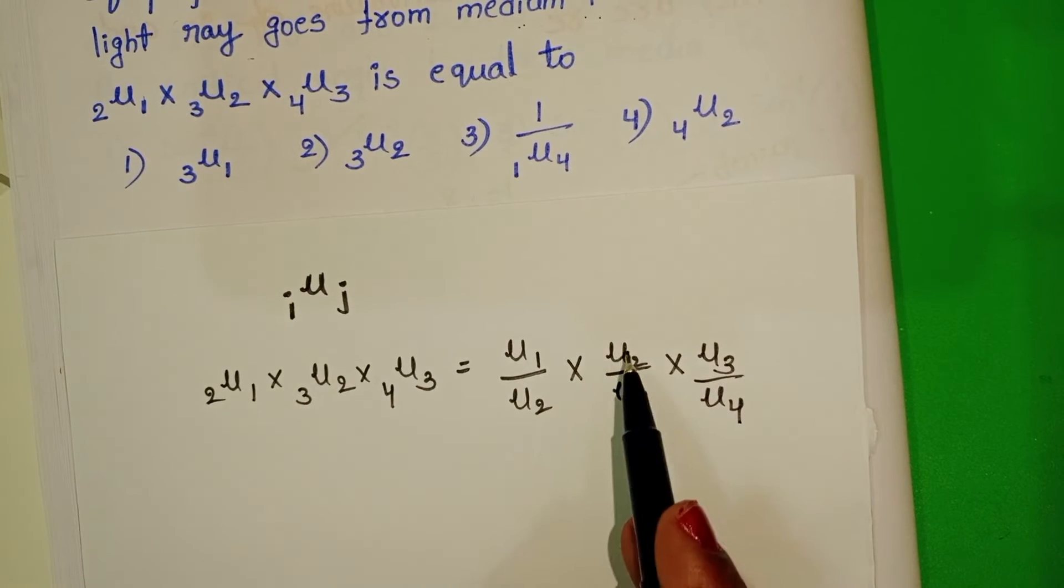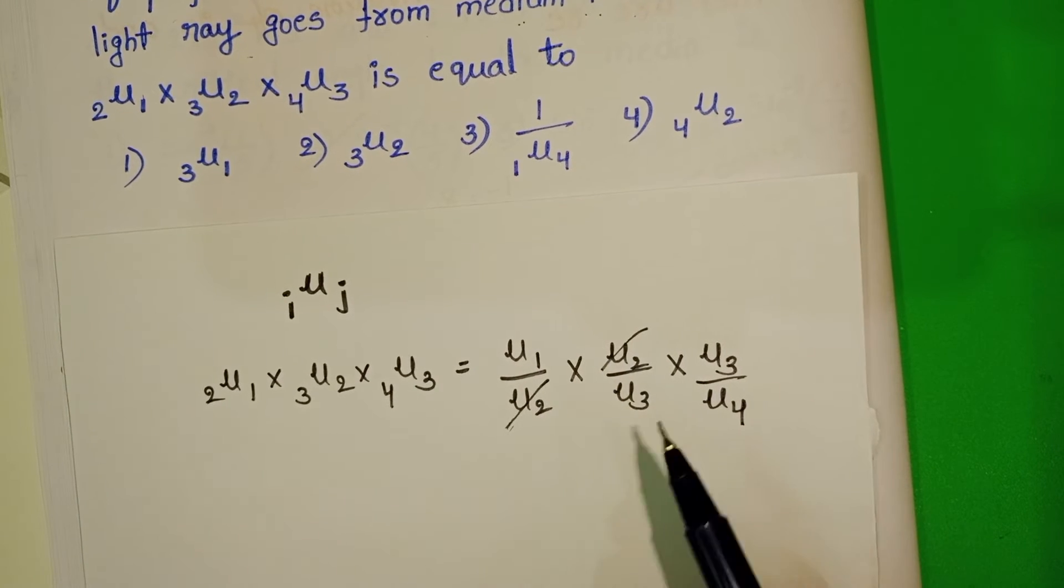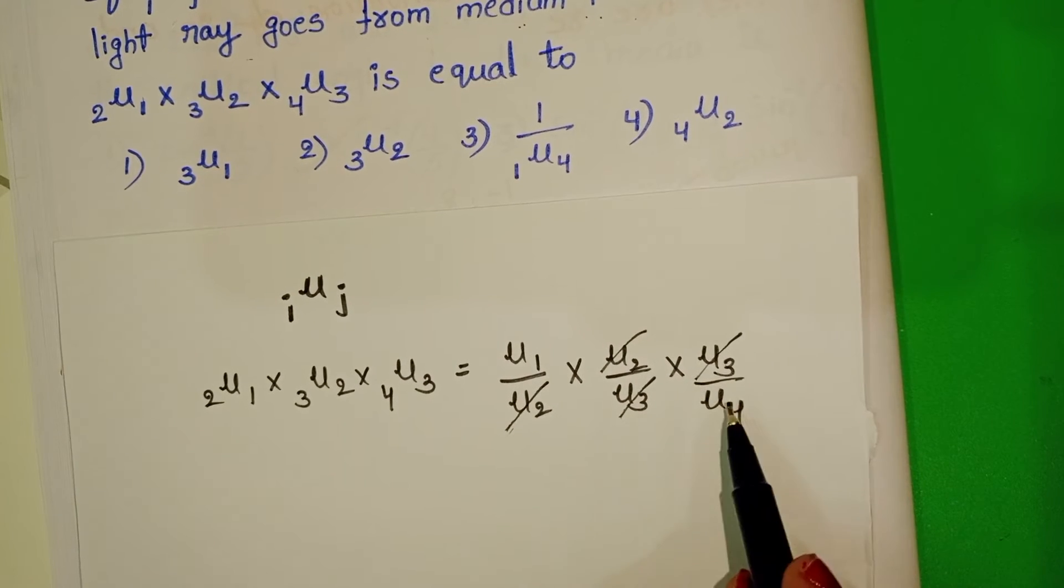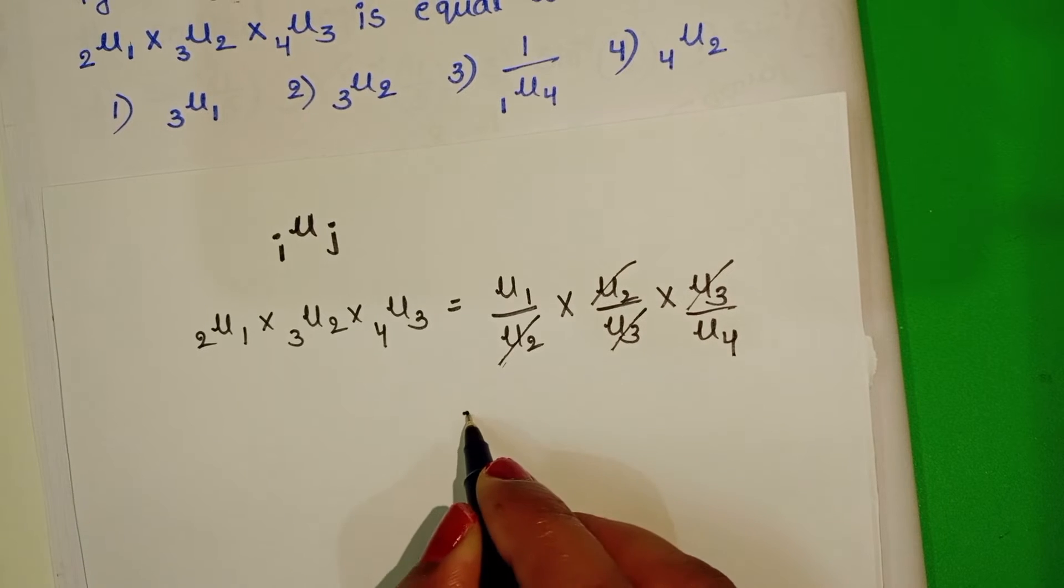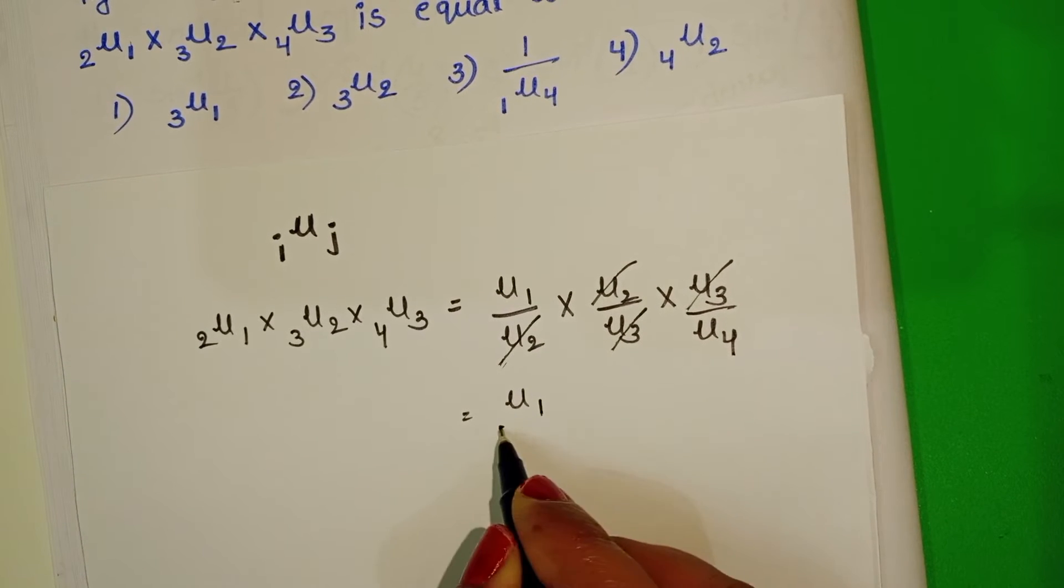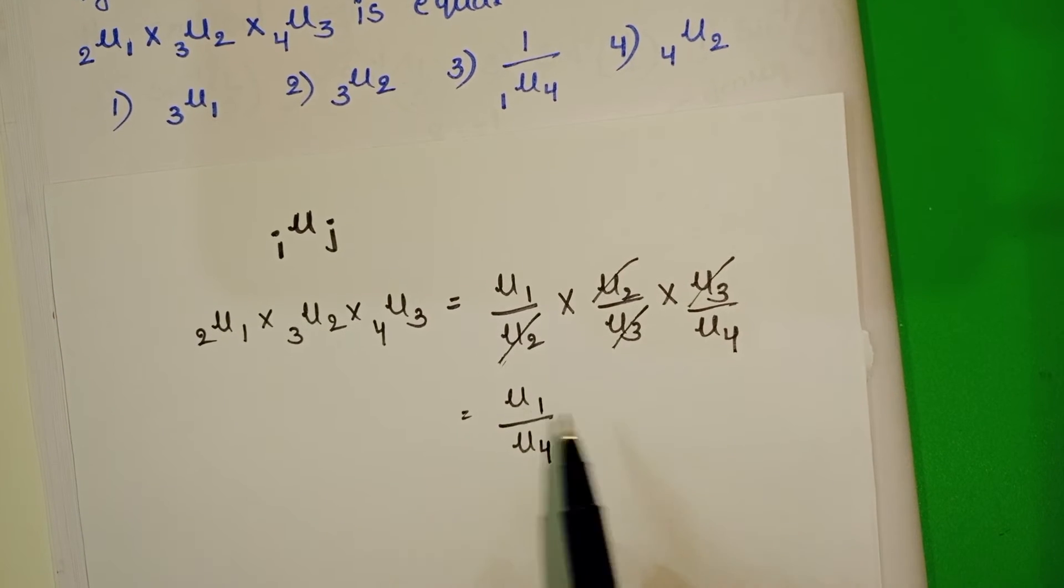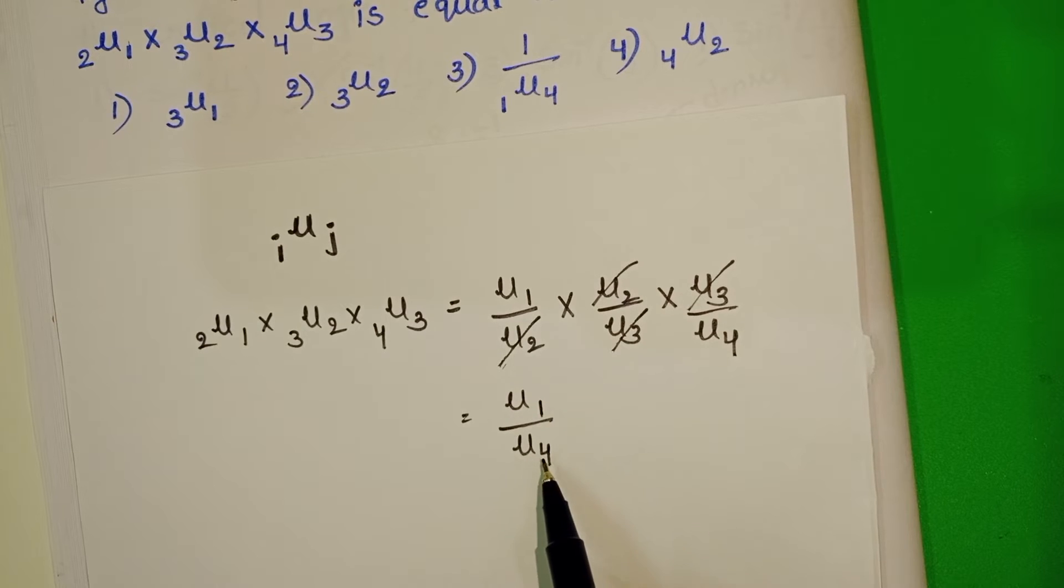Here mu 2 and mu 2 get cancelled, mu 3 and mu 3 also get cancelled. That is equal to mu 1 by mu 4, refractive index of first medium to the fourth medium.